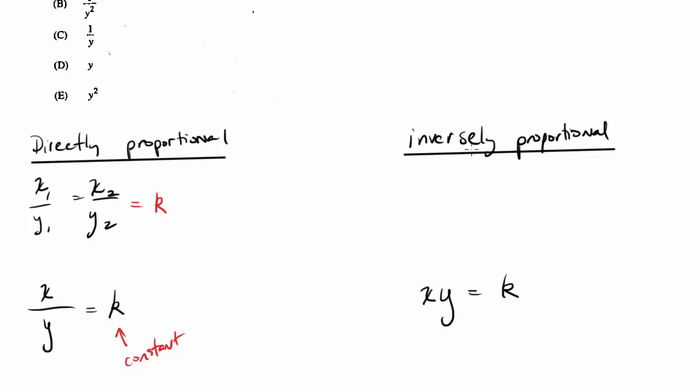For directly proportional, the quotient is a constant. For inversely proportional, the product is a constant. So you also could write it like this: x1, y1 is equal to x2, y2. But for our purposes, we're going to stick with these definitions down here.